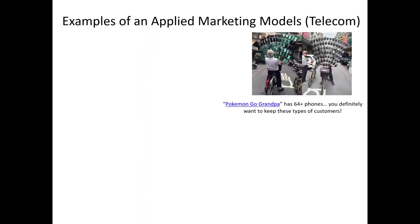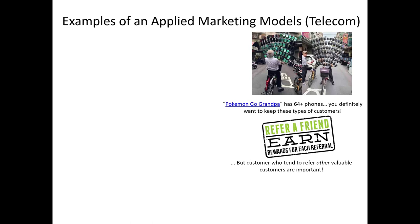Let me illustrate another example of a marketing model used in the real world — this comes from the telecom industry. Telecom companies obviously value customers differently; some customers spend more money or have more active lines than others. Maybe during the height of Pokemon Go, you heard about the so-called Pokemon Go grandpa — he had many phones running simultaneously so he could catch as many Pokemon as possible while traveling. An individual like this is particularly valuable to a company since they have so many active lines. Another way a telecom customer can be valuable is not through their individual purchases or subscriptions, but rather through referrals — a refer-a-friend program. Somebody who refers a friend who then signs up for three or four lines makes the referrer very valuable because of their word of mouth activity.